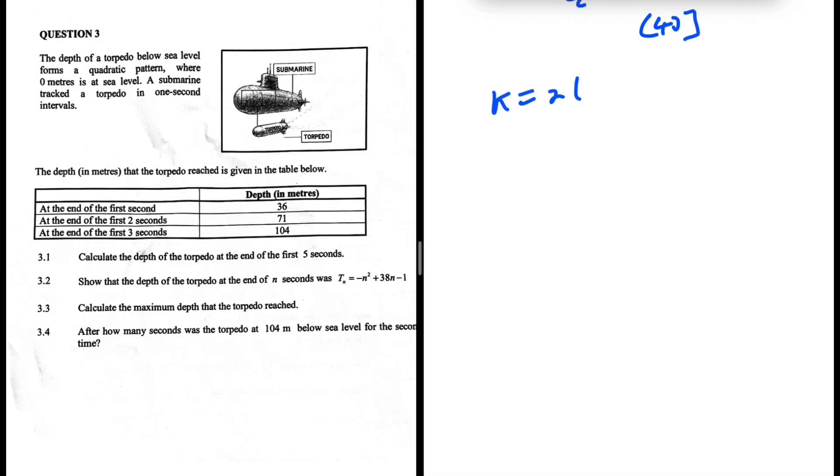Calculate the depth of the torpedo at the end of the first five seconds. Let's see, the depth of some object below sea level forms a quadratic pattern where zero meters is at sea level. A submarine tracked the object in one second intervals. The depth in meters that the object reached is given in the table below.